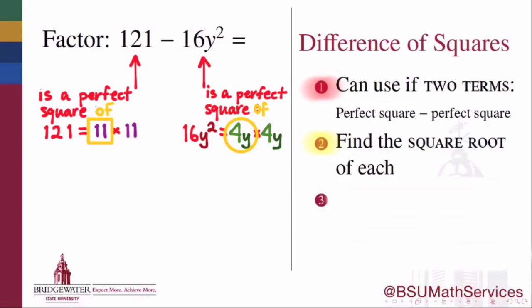So 121, because it's equal to 11 times 11, has as its square root the number 11.